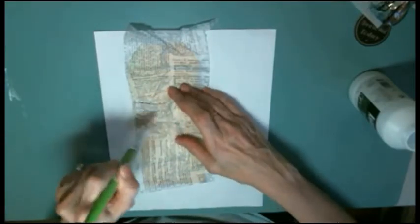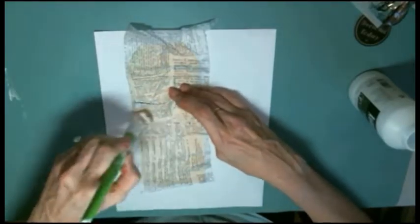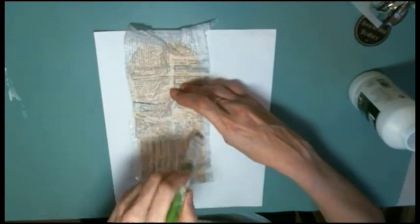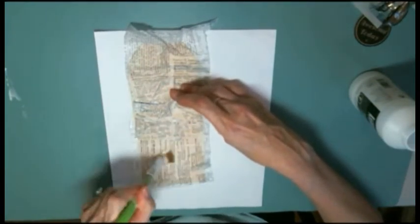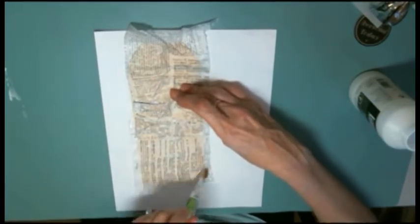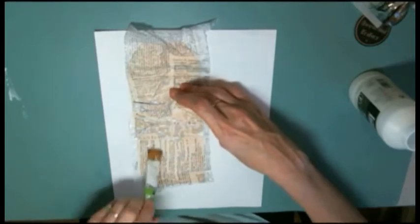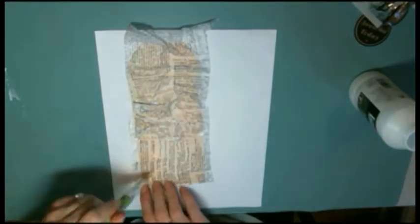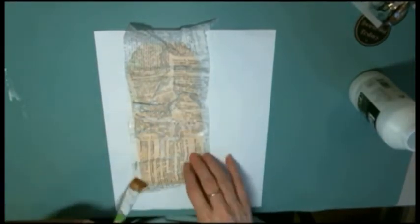Now I'm going to use matte medium over the top. And you can see I'm not trying to fit it all on the tag. When the matte medium is dry, I'm going to trim it all around the edges so that everything fits.